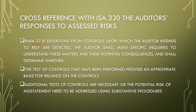Under RSA 330 paragraph 17, if deviations from controls upon which the auditor intends to rely are detected, the auditor shall make specific enquiries to understand these matters and their potential consequences, and shall determine whether the tests of controls performed provide an appropriate basis for reliance on the controls. Additional tests of controls may be necessary, but the potential risk of misstatements needs to be addressed using substantive procedures, also known as test of details.